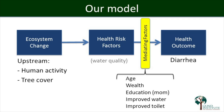This is the model we want to test: how ecosystem changes lead to changes in health risk factors and ultimately to measurable health outcomes in populations, by going through yellow mediating factors — things that might insulate people from getting sick even if they're exposed to risk. We take data on upstream human activity and tree cover and connect it through water quality to diarrhea incidence in children. We spend a lot of time on mediating factors — other things that might make a child less likely to get disease: age, wealth, education, and household infrastructure.